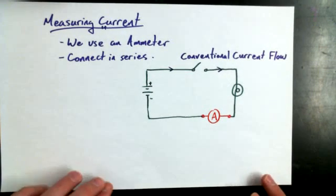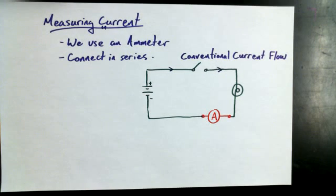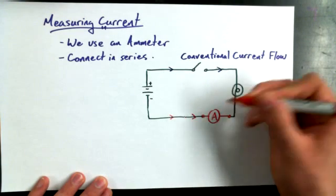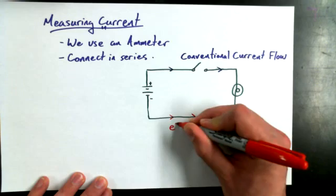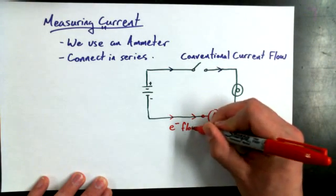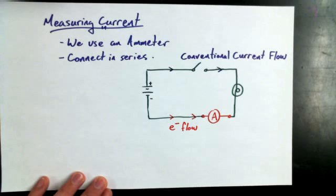And then at some point later in history, some people came along and said, oh, wait a minute, we understand the structure of these particles we call the atoms, and we recognize at this point that it's not the positives that are moving. We know now that in fact, it's the electrons. And I'm going to write that as an E with a negative sign. Electron flow is what's really happening. Here's the thing.